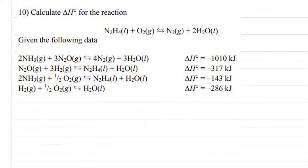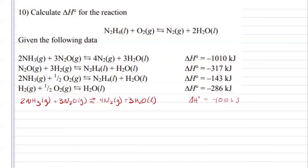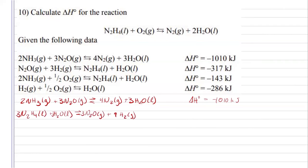Last but not least, number ten. Instead of giving three steps, we're given four, so make sure you have enough room on your paper to do this one. My first equation gives me the nitrogen gas as a product, and I need it as a product, so I'm just going to keep it as is — no changes in enthalpy. For my second reaction, it has N2H4 as a product and I need it as a reactant, so I'm going to flip it. But not only am I going to do that — I now have three moles of liquid water, so I can multiply this one by three to cancel it out. Flipping it and multiplying it by three gives me an enthalpy of 951 kilojoules.